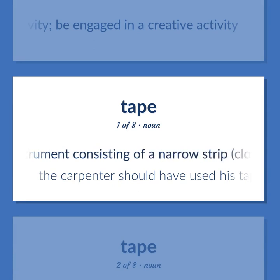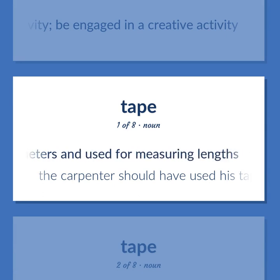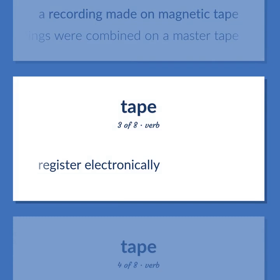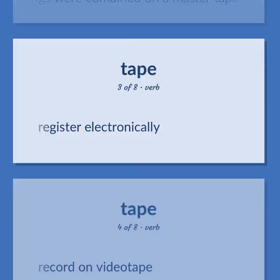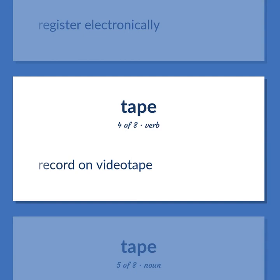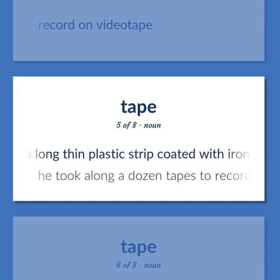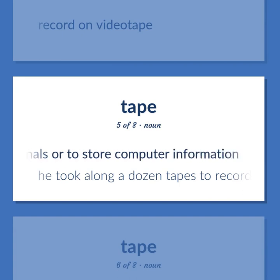Tape: Measuring instrument consisting of a narrow strip, cloth or metal, marked in inches or centimeters and used for measuring lengths. The carpenter should have used his tape measure. A recording made on magnetic tape. The several recordings were combined on a master tape. Register electronically. Record on videotape. Memory device consisting of a long thin plastic strip coated with iron oxide, used to record audio or video signals or to store computer information. He took along a dozen tapes to record the interview.